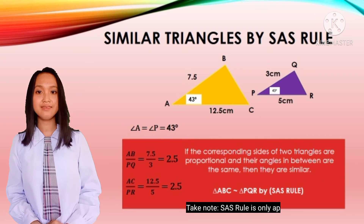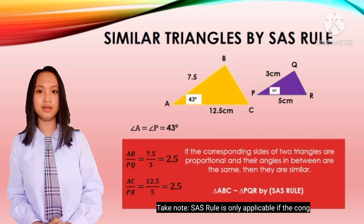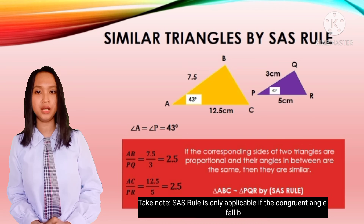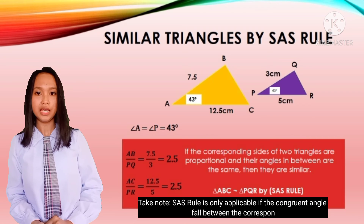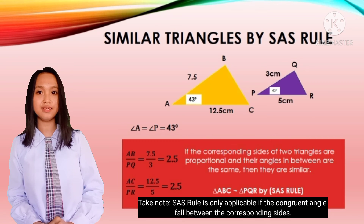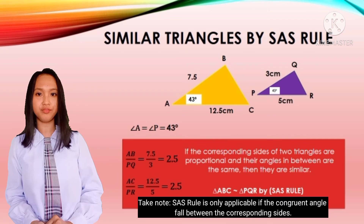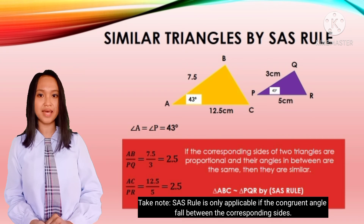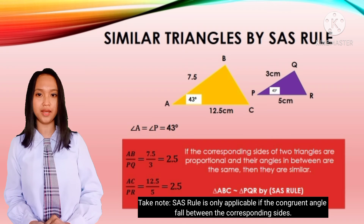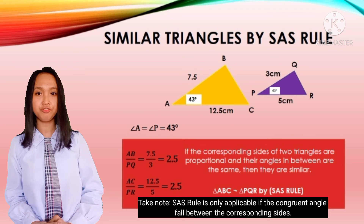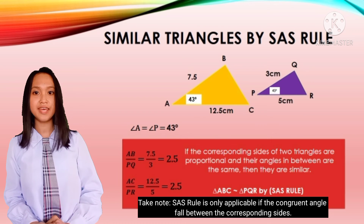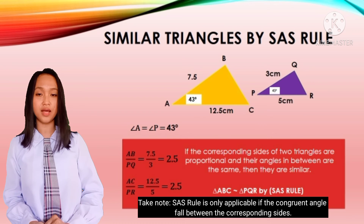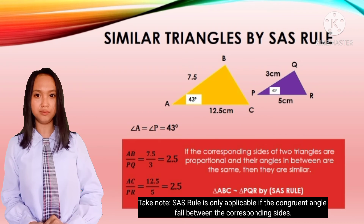Take note: the SAS rule is only applicable if the angle is in between the corresponding sides of the triangle. If not, the SAS rule is not applicable.